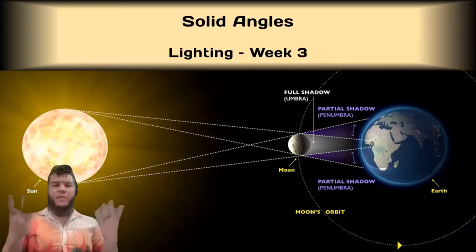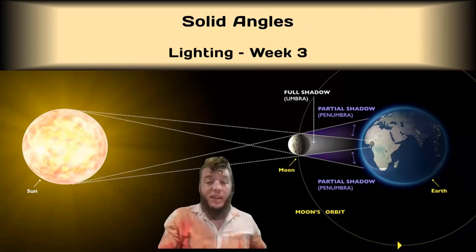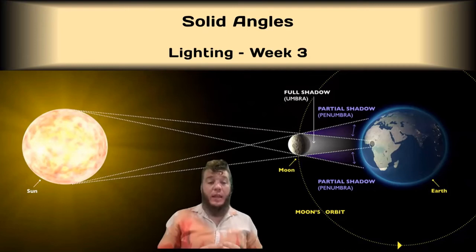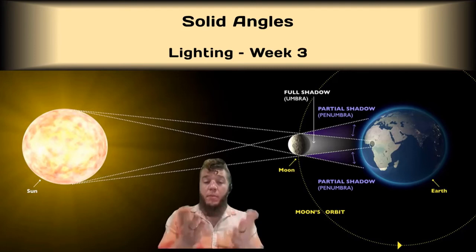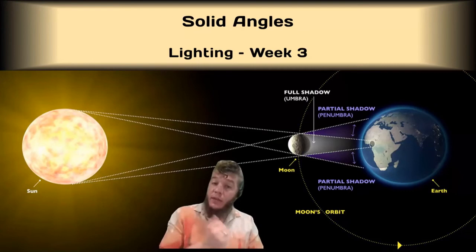Moving on to solid angles. This is foundational to understanding light and gives us our candela tables, which are the basis of polar candela plots — essentially a 2D version of the photometric web, telling you everything about how a light source distributes light into your space.